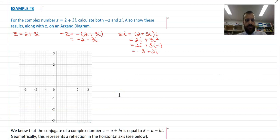Here's our example for the complex number z equals 2 plus 3i. Calculate both negative z and zi. Also show these results along with z on an Argand diagram. So we've already done the calculations, but we're going to talk about one of them specifically.